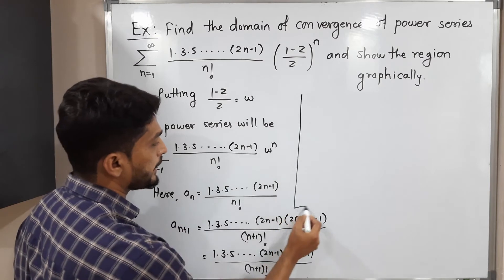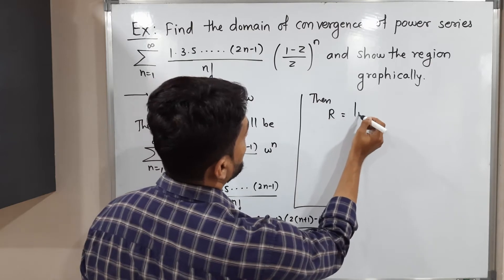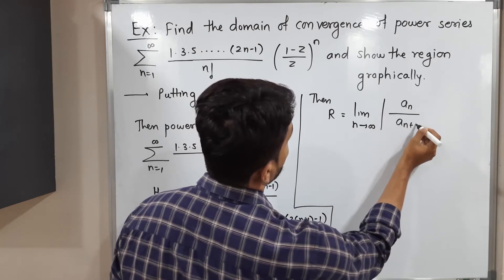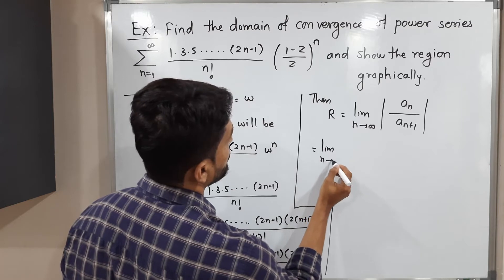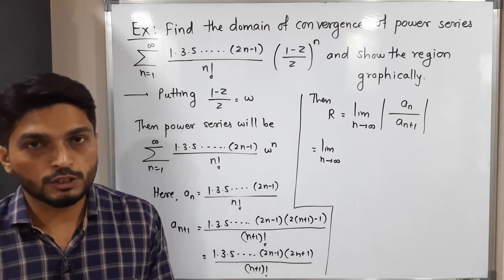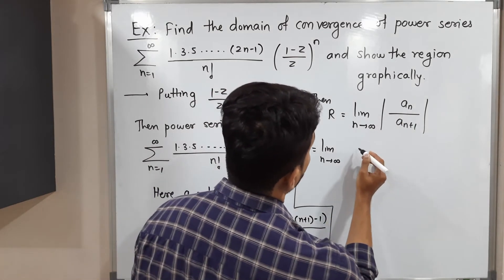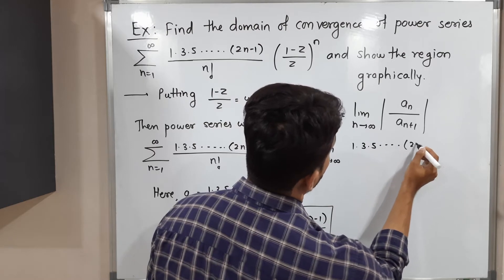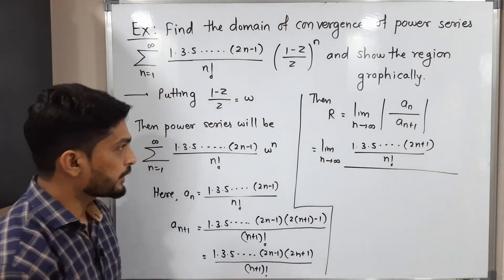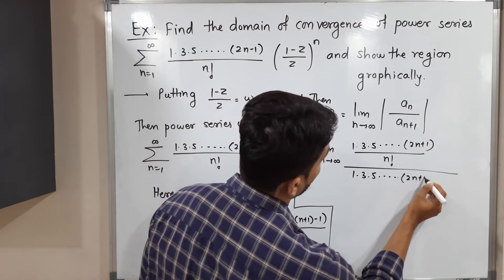Now applying the formula: R equals the limit as n tends to infinity of a_n divided by a_{n+1}. There is no need to apply the modulus since we already have positive real numbers. Substituting: the numerator is 1 times 3 times 5 and so on to (2n minus 1) divided by n factorial, and the denominator is a_{n+1}.